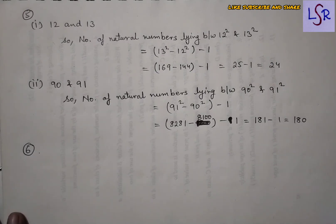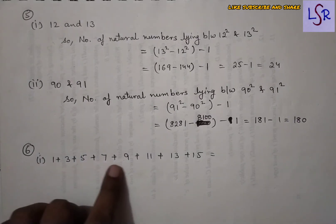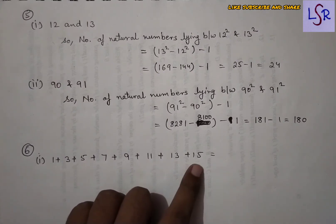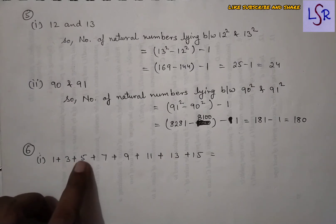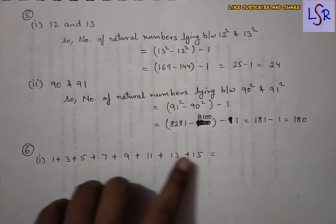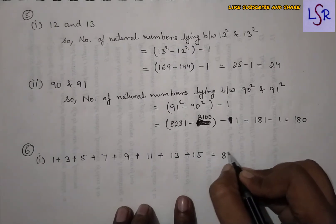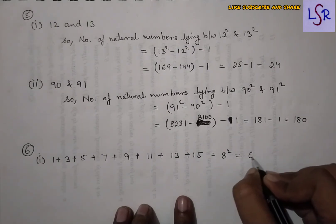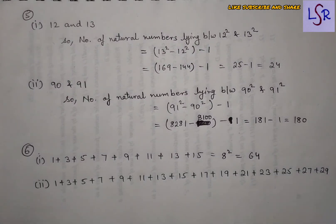In Question 6, we find the sum of odd numbers without actually adding them. For the series 1, 3, 5, 7, 9, 11, 13, 15 — we count the terms: there are 8 terms, so the sum is 8²=64.